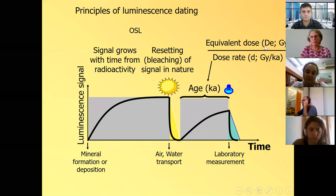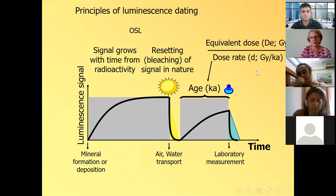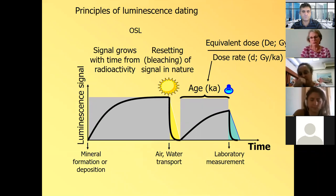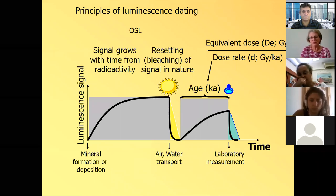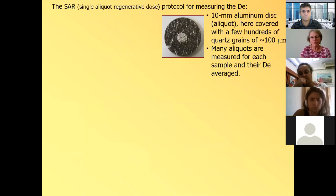And it grows until at this point in time where we take it into the lab without exposing it to the sunlight and measuring the signal. So this is the luminescence signal that we measure in the lab. The reason the signal grows is because of the radioactivity from the environment. And to obtain the age, we need two numbers. One is the equivalent dose, which is how much radiation created this signal. And the other number is dose rate, how much radioactivity we have in the environment.